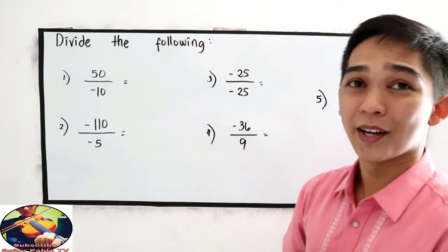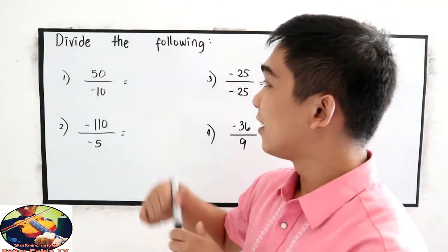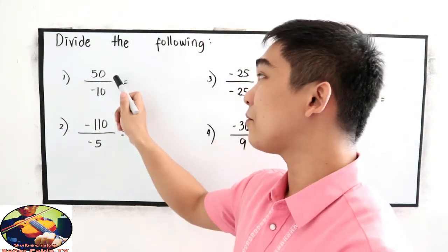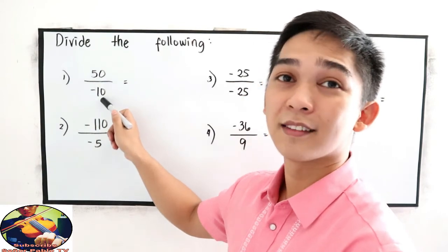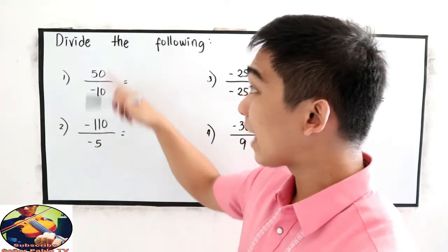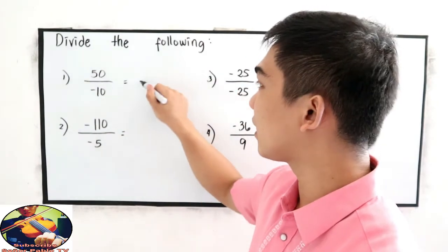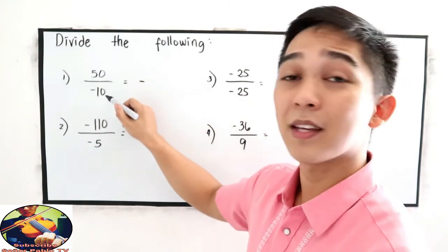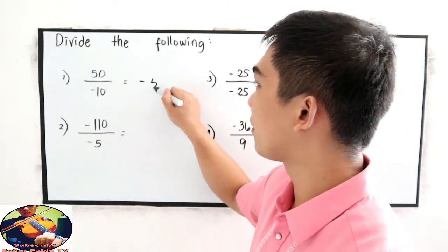Let's try number 1: positive 50 divided by negative 10. Unlike signs, so the sign is negative. 50 divided by 10 is 5, so the answer is negative 5.